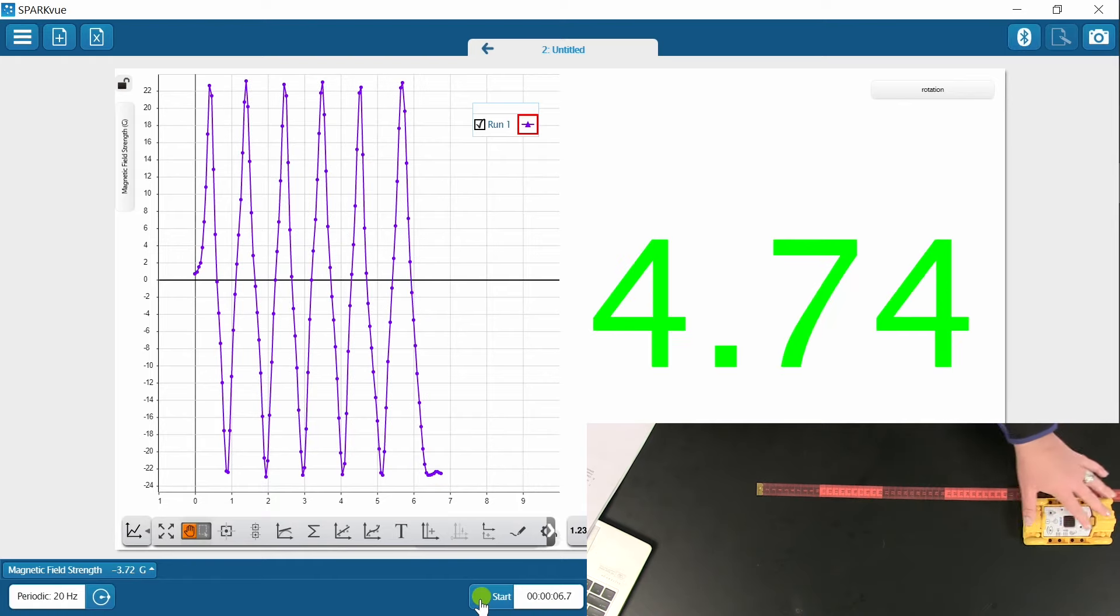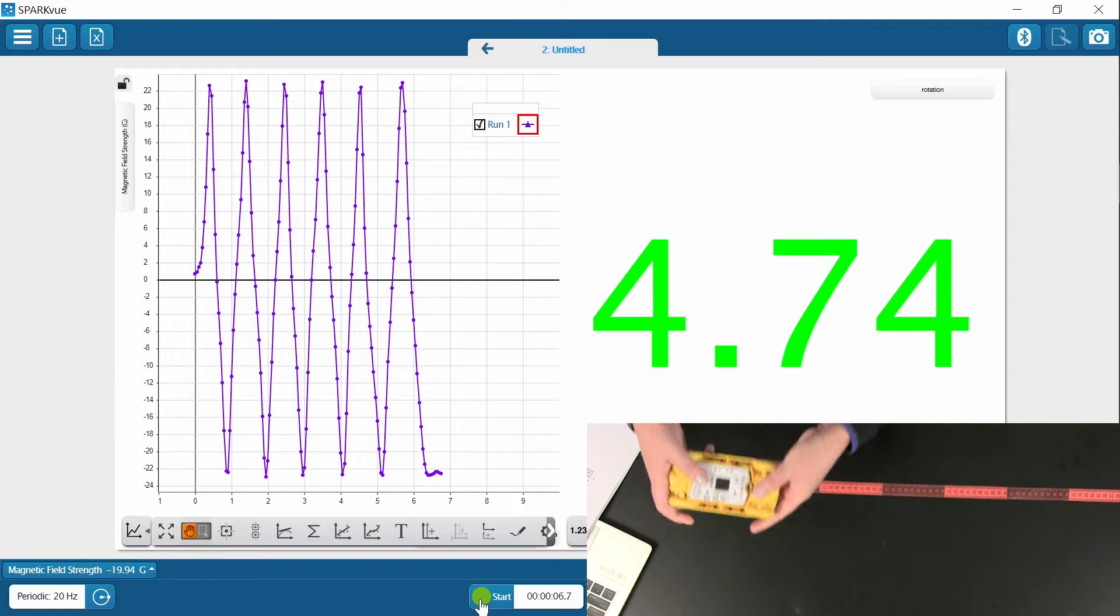I'm going to click start and I'm going to roll the cart half a meter. Check it out. So it's saying that the cart went about 4.74 rotations. So a little less than five full rotations of this wheel occurred in the distance that I pushed. And you're very close because you can compare that rotation to your magnetic field strength data. Pretty cool program.